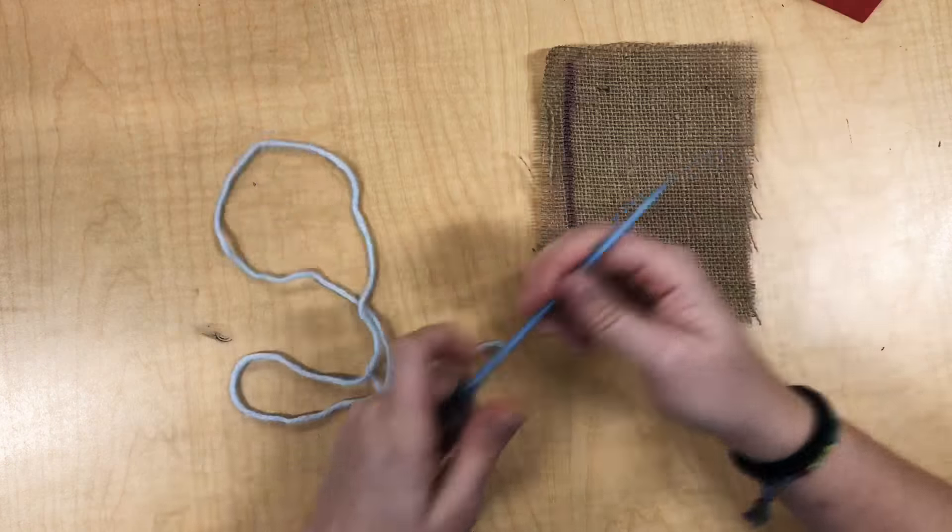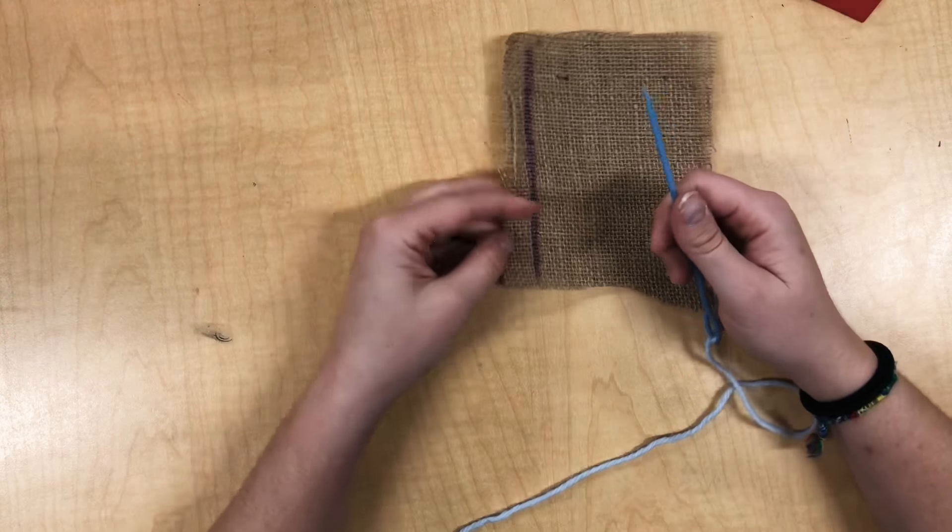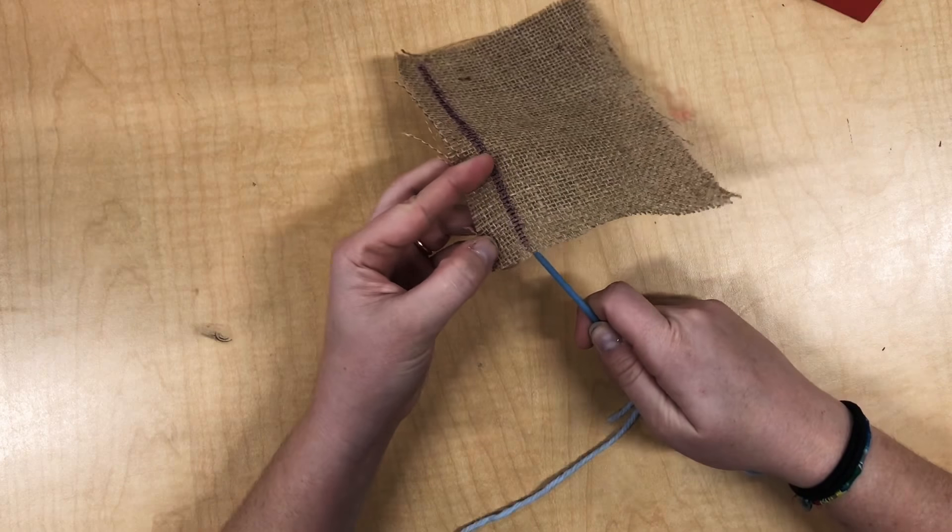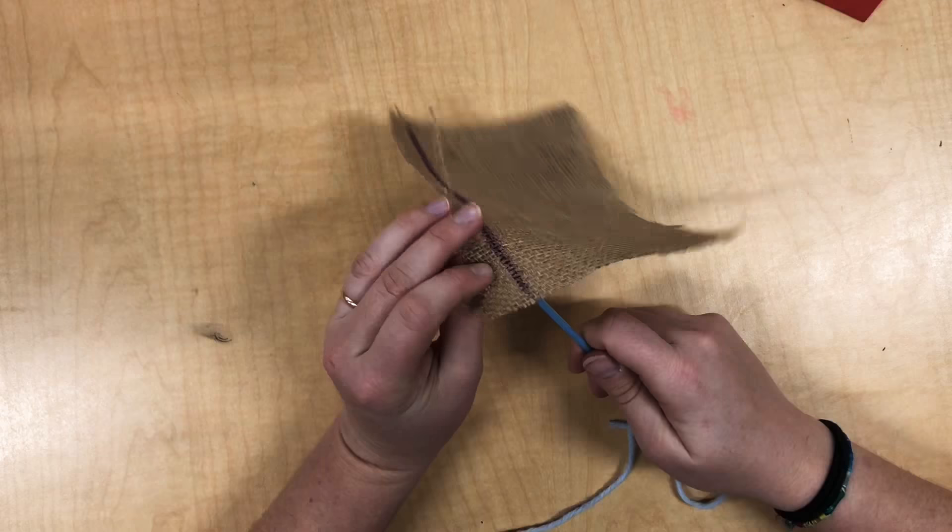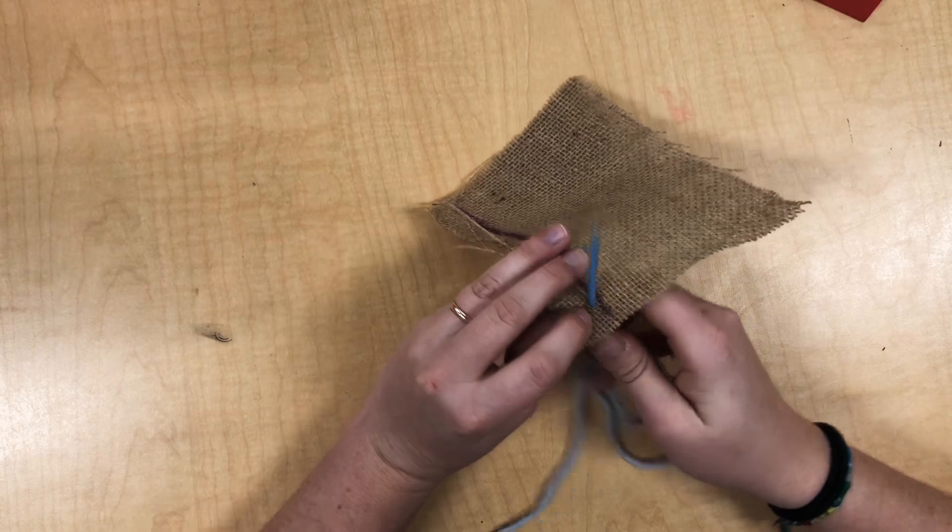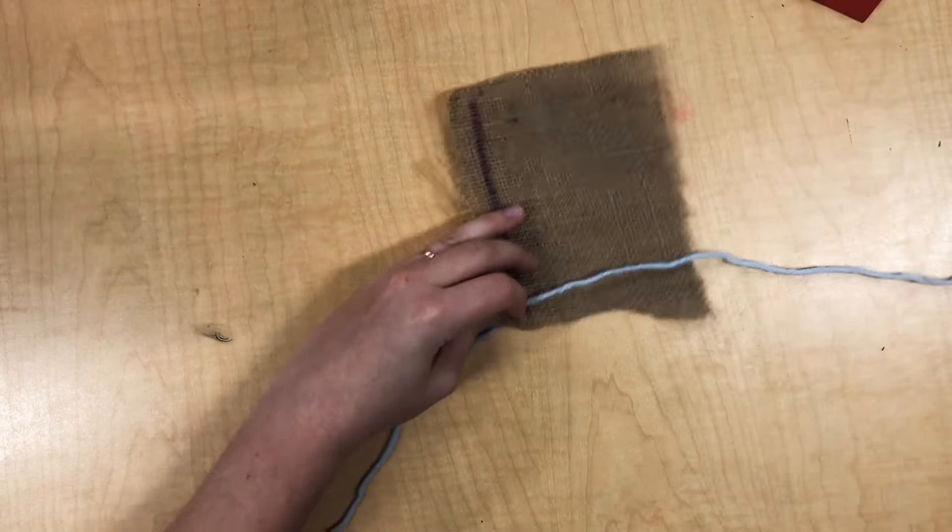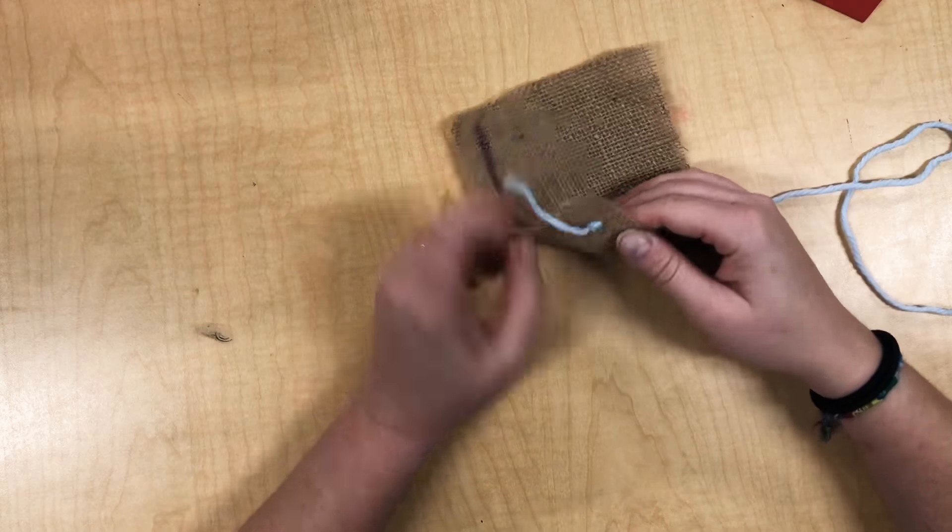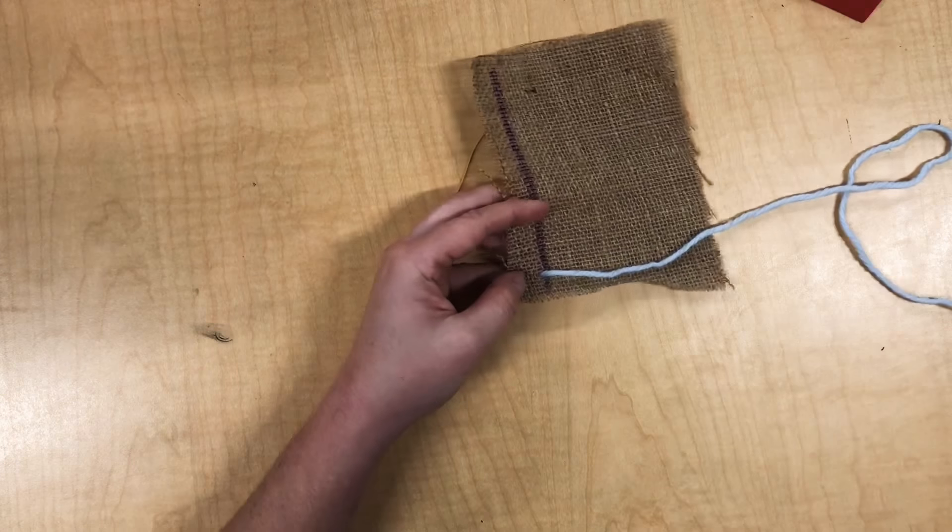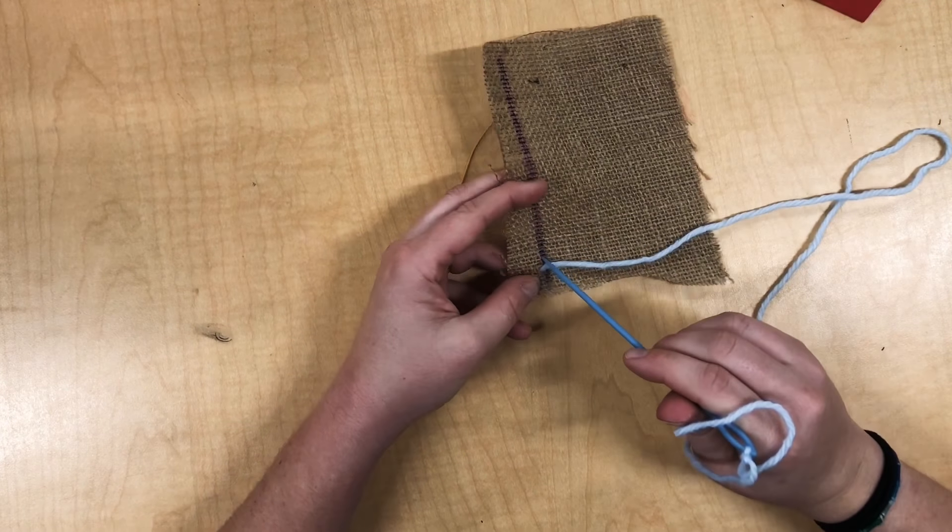Now I'm ready to start sewing. Today we're gonna practice a running stitch. So to do my running stitch, I'm gonna take my needle, put it through the back, pull it through. I keep pulling, but not too hard. I don't want this knot to come through.